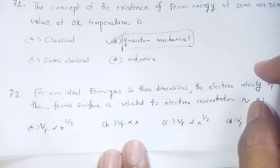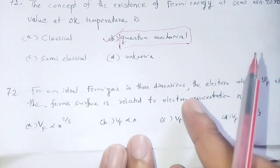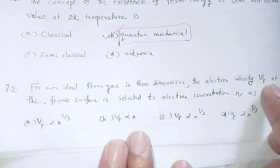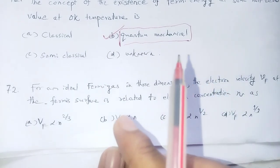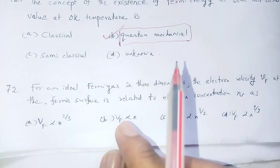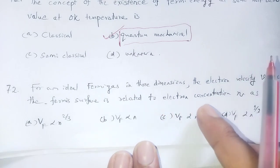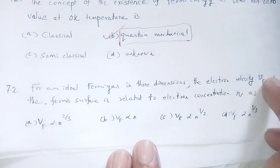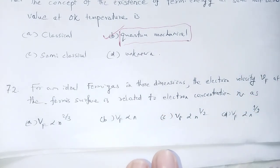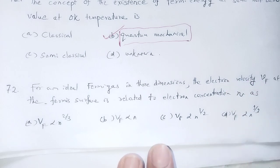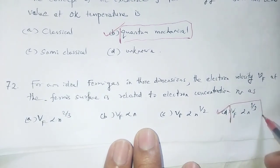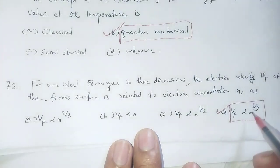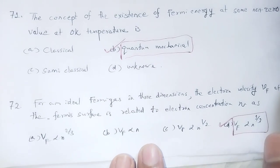Question 71: For an ideal Fermi gas in three dimensions, the electron velocity V_F at the Fermi surface is related to electron concentration n as: V_F is directly proportional to n to the power 1/3.